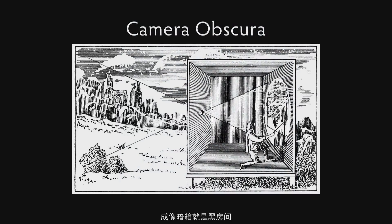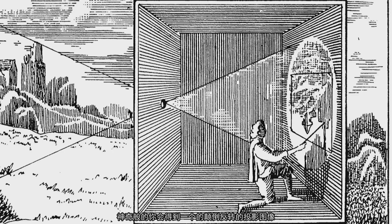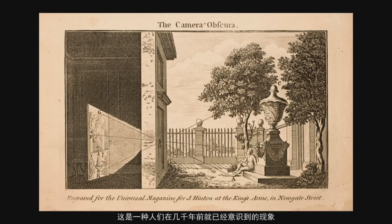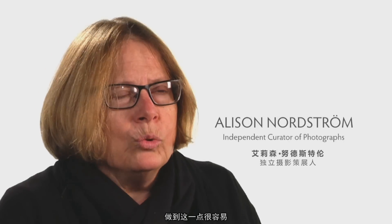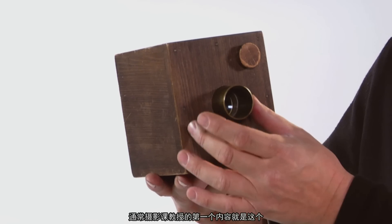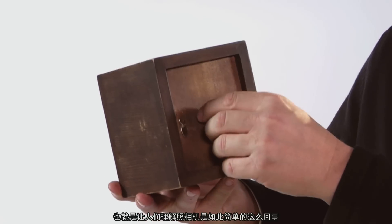Camera obscura means dark room — that's all it is. It's a room with no light in it. And if you have a room with no light and you poke a little hole in the side of that room and let light in from the outside, by miracle you'll have an image projected upside down, turned around, but in color and moving on the other side of the wall. It's a phenomenon that people have been aware of for thousands of years, and it's very often the first project taught in photography classes to get people to understand the simplicity of what the camera is.